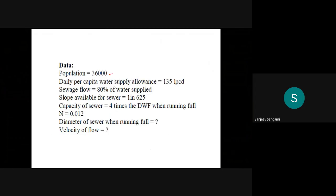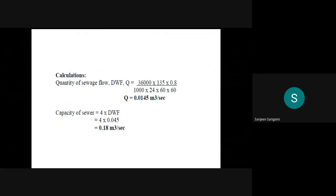The given data includes population, sewage flow, slope, dry weather flow condition, and n value. We have to calculate the diameter D as well as the velocity of flow V. The first important step is to calculate the dry weather flow, which can be calculated using the given formula.